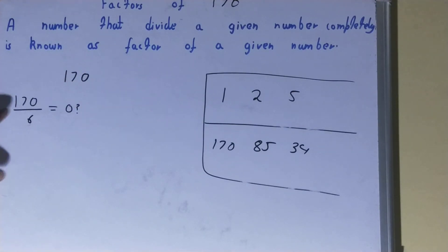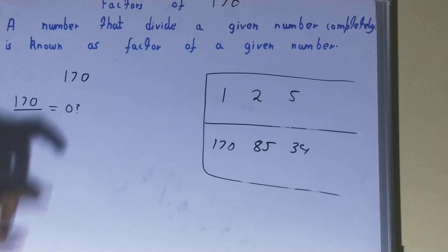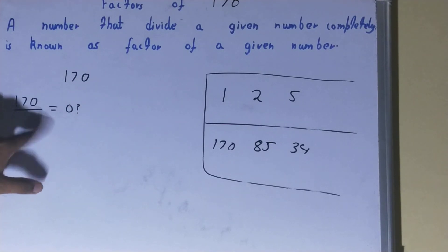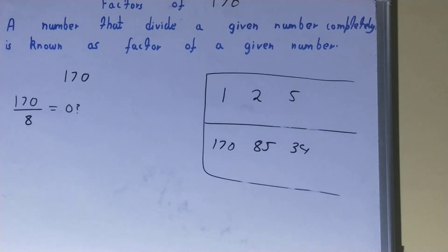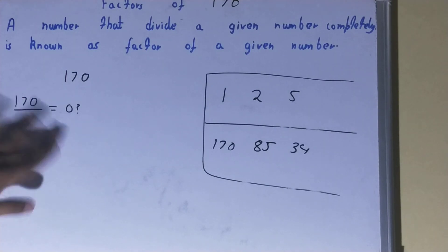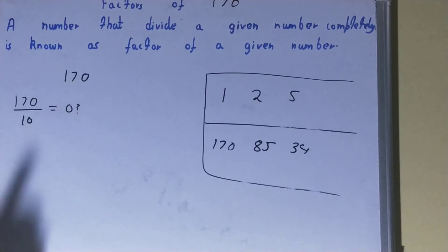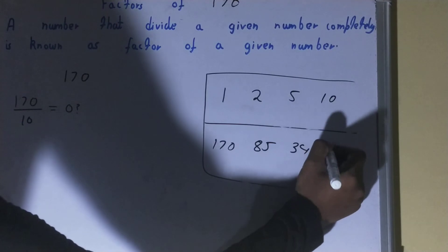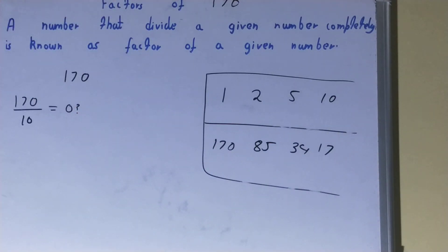After 5, we try 6 — 6 cannot divide. 7 cannot divide. 8 cannot divide. 9 cannot divide. Then 10 — yes, 10 can divide 170. So 10 is a factor, and 10 times 17 equals 170, so 17 is also a factor.